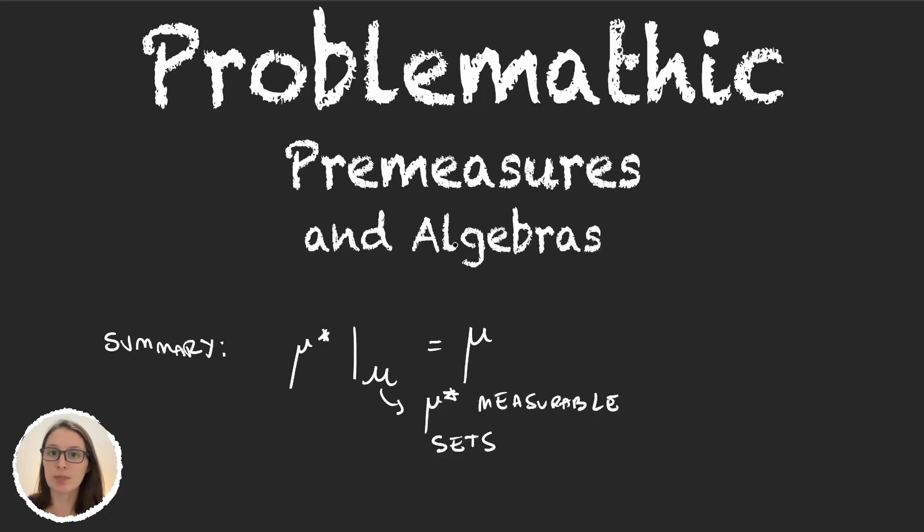But there's a problem with this. We have an outer measure and an outer measure is defined over parts of x, and then we have to restrict this function to the μ* measurable sets. But if I ask you, given any set, is this set μ* measurable?